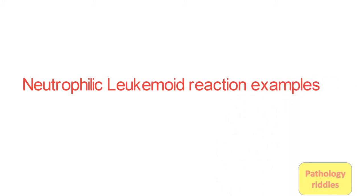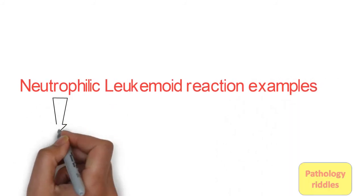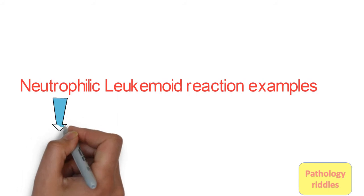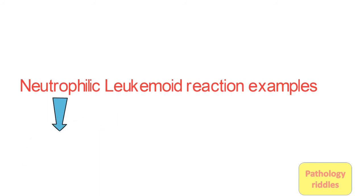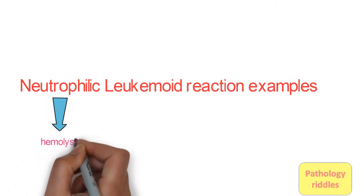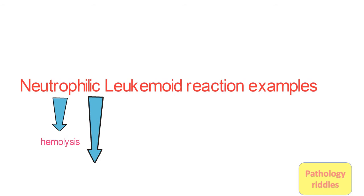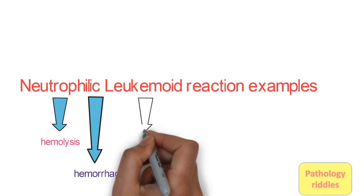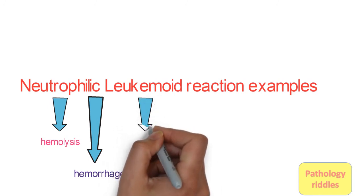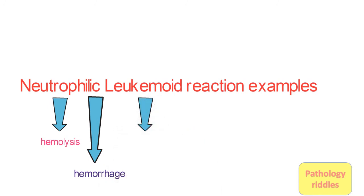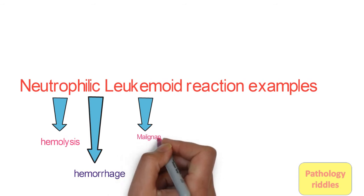The most common type that we encounter in our practice is neutrophilic leukemoid reaction. A few examples are hemolysis. When there is breakdown of RBCs or when there is loss of blood like in hemorrhage, there will be accompaniment of increased neutrophil count and it will go up to greater than 50,000 per microliter.